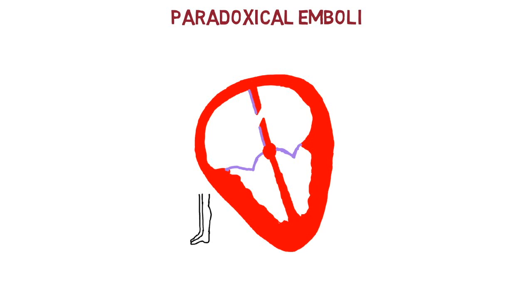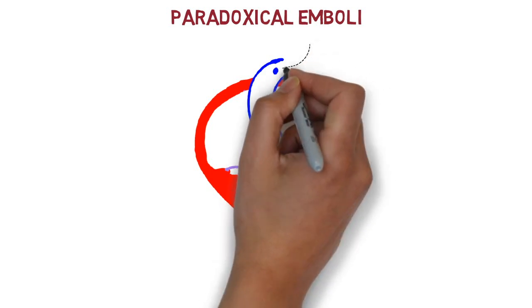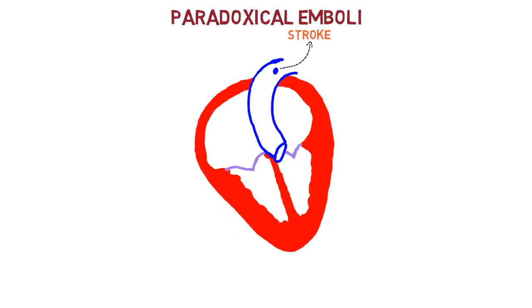Let's discuss paradoxical emboli. A blood clot in the legs can cross into the right atrium and reach the left side of the heart through the ASD. From there, the embolus can travel through the aorta to the systemic circulation and potentially cause a stroke or peripheral emboli. That is how a paradoxical embolus can occur.